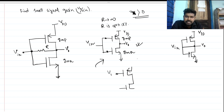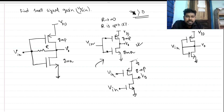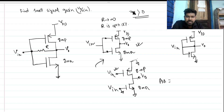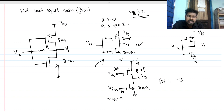Using superposition, Vin is applied to both gates. This is the small signal ground. If only this input is active and the other is grounded, the dependent current source for the grounded gate goes out of the picture because Vgs becomes zero.